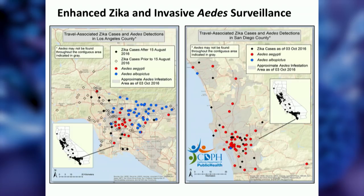At UC Davis, my colleagues are involved in statewide surveillance of arboviruses in mosquitoes. Mosquito control districts send their speciated mosquitoes to UC Davis where they're pooled and tested by RT-PCR for three viruses endemic in the state: West Nile, western equine encephalitis virus, and St. Louis encephalitis virus. We also now test Aedes pools for exotic viruses we're worried about being introduced, including dengue, chikungunya, and Zika.